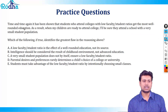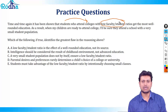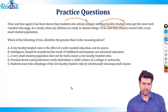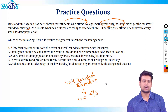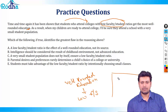Next question: time and again it has been shown that students who attend colleges with low faculty-to-student ratios get the most well-rounded education. As a result, when my children are ready to attend college, I'll be sure that they attend a school with a very small student population. So for a well-rounded education, the argument requires a low faculty-to-student ratio, and the author concludes a small student population achieves this.